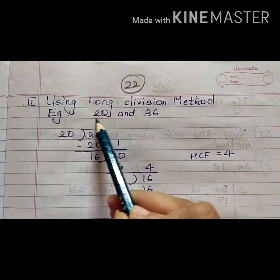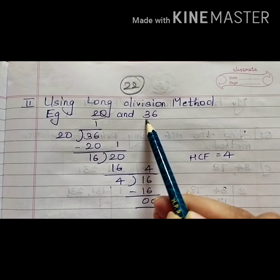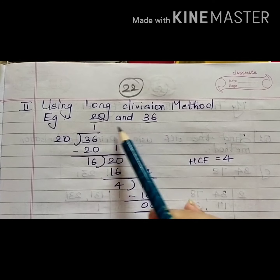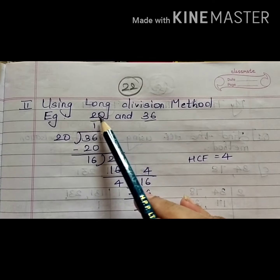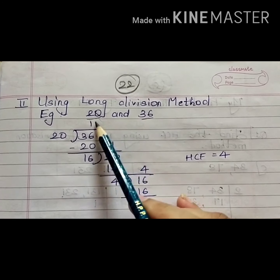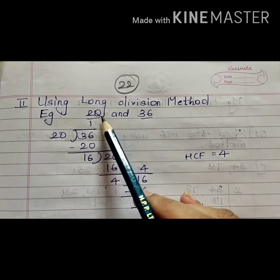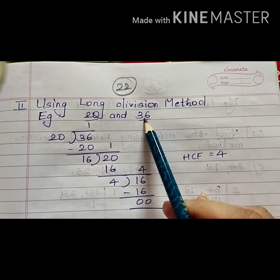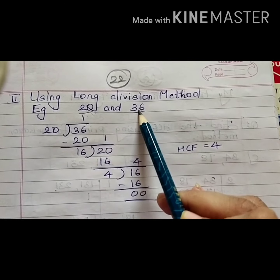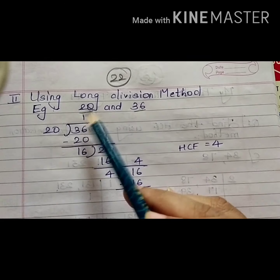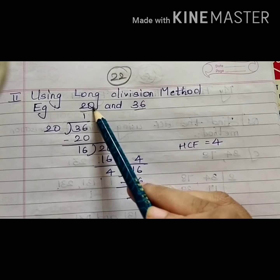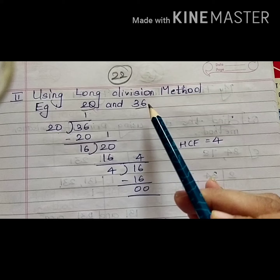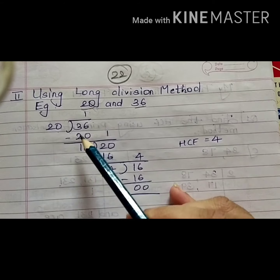I have the numbers 20 and 36. I have to find the HCF of 20 and 36. What I do is keep the smaller number as the divisor and the bigger number as the dividend.